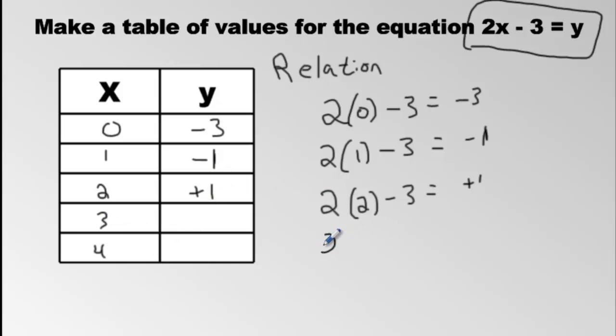And now x is going to be 3, this ain't too hard. And then you're going to get 2 times 3, 6 minus 3 is positive 3. And for the last one, we're going to put 2 times 4. Minus 3 is going to be 5. Positive 5.